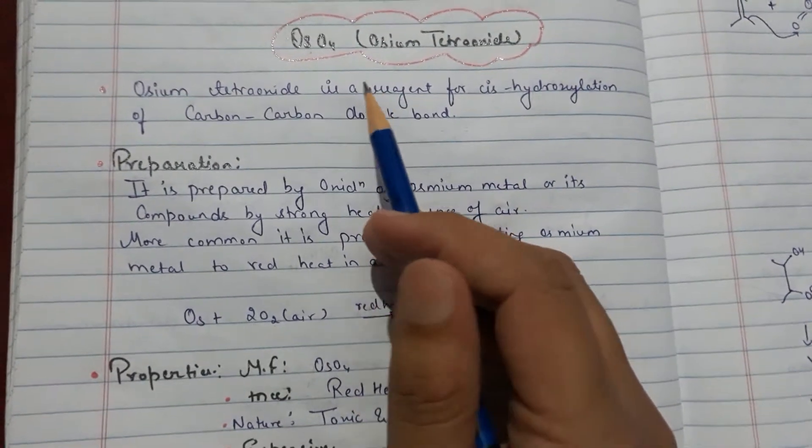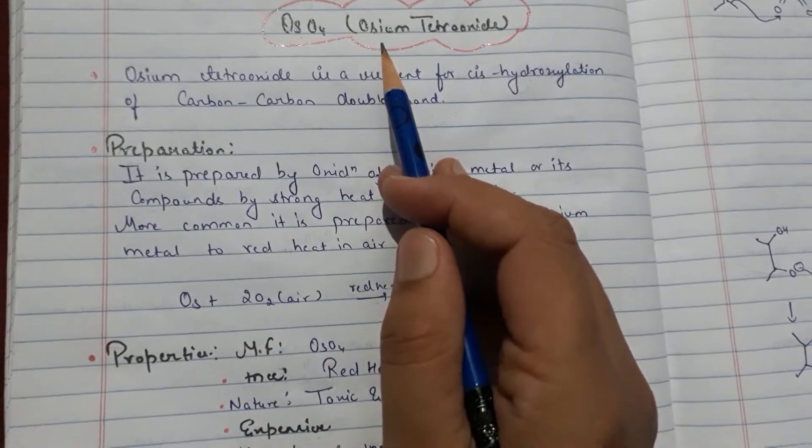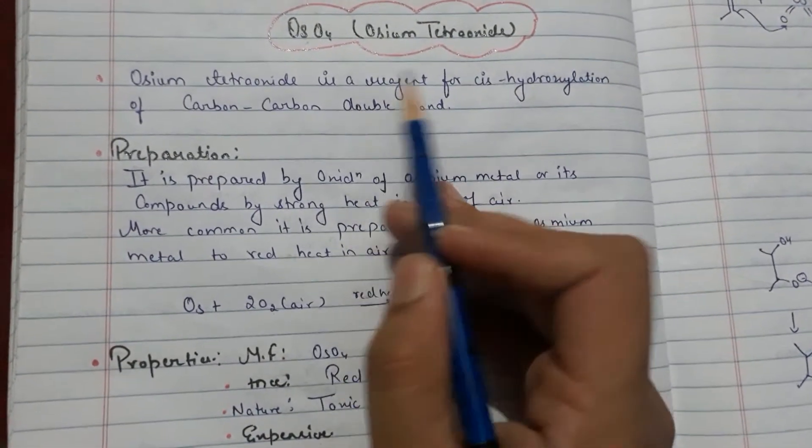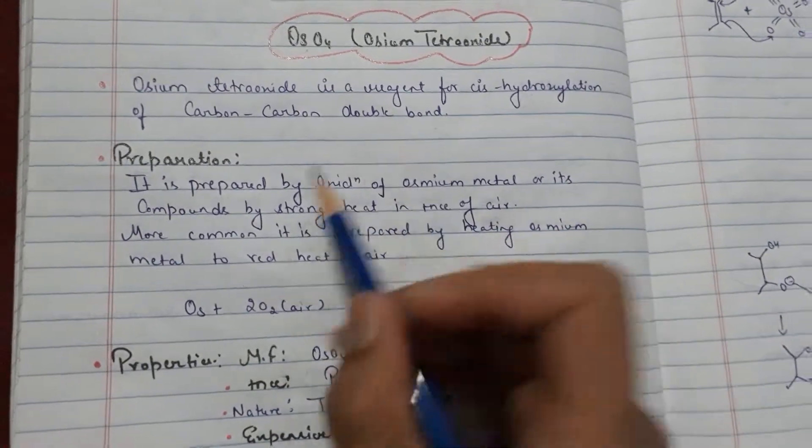Hello everyone, welcome to MSA Chemistry. Today's topic is Osmium Tetraoxide. This is an oxidizing agent and it is used for cis-dihydroxylation of carbon-carbon double bond.